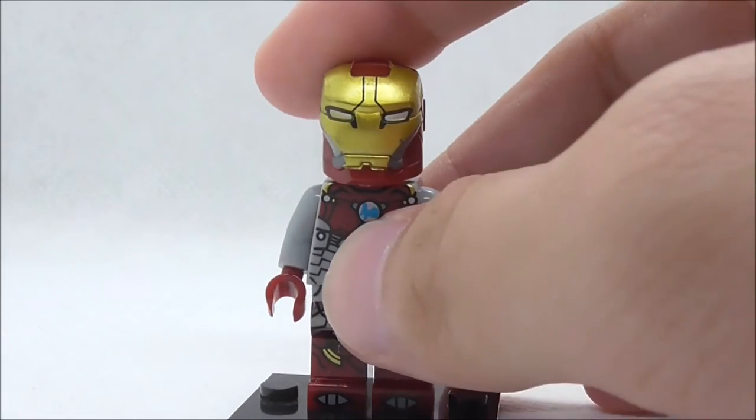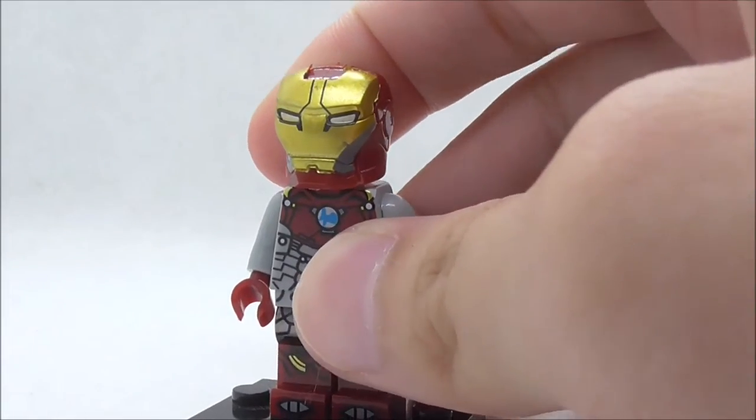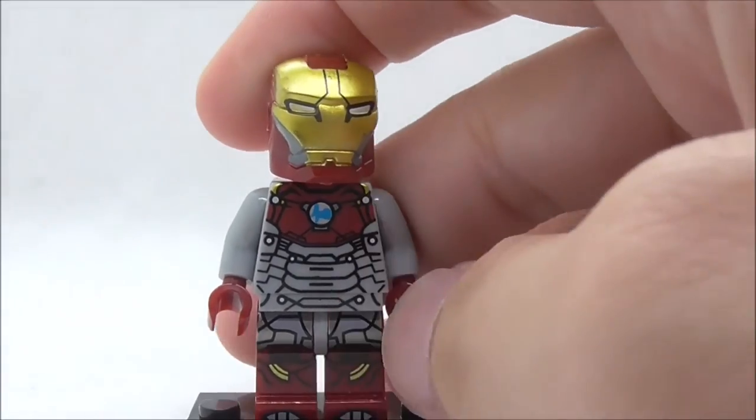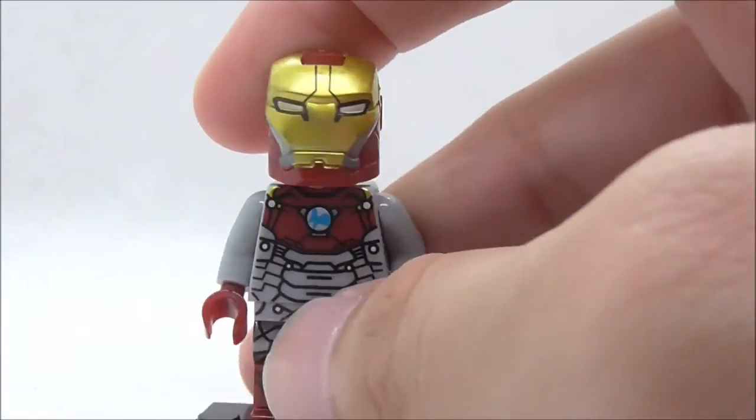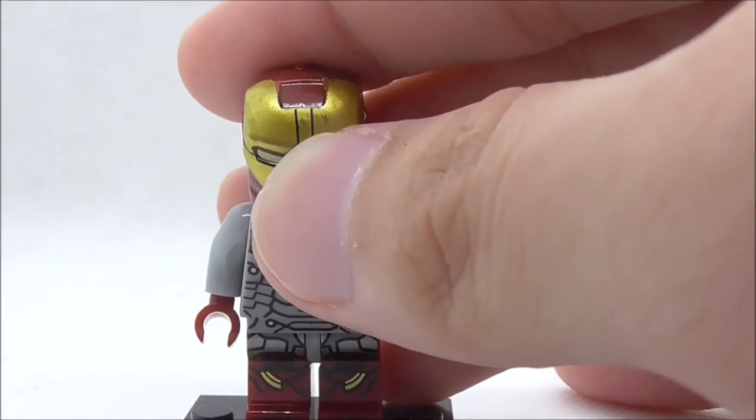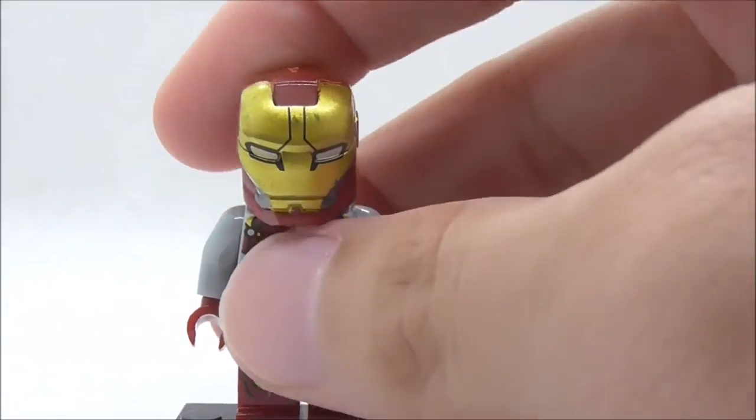Let's start with the helmet first. The helmet is lifted directly from the Iron Man Mark 45. You have the eyes right here, you have a black lining, and you have the silver detailing at the side. There is a little bit of a scratch right here, which does kind of suck. The quality control of this isn't that great.